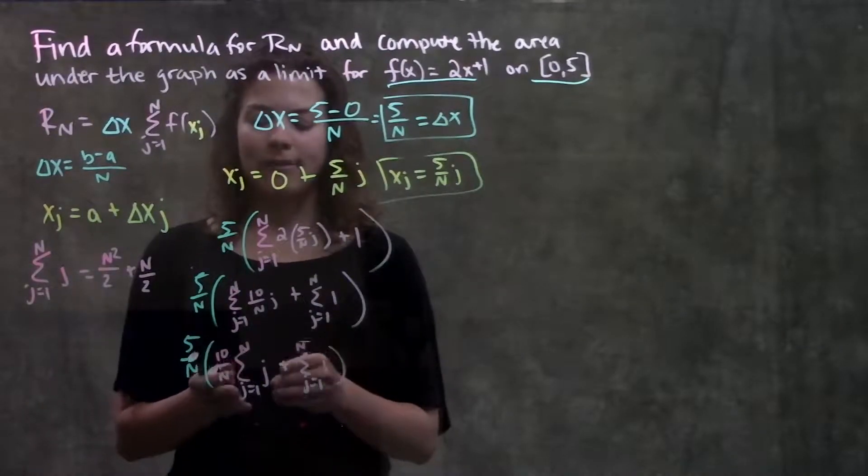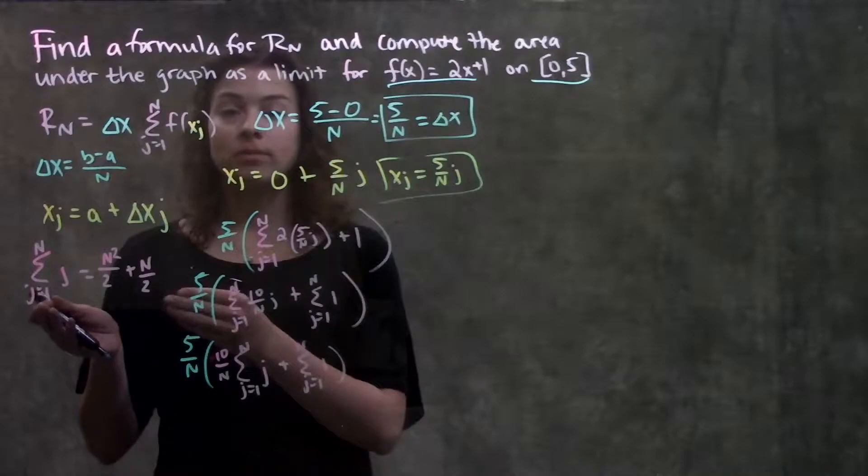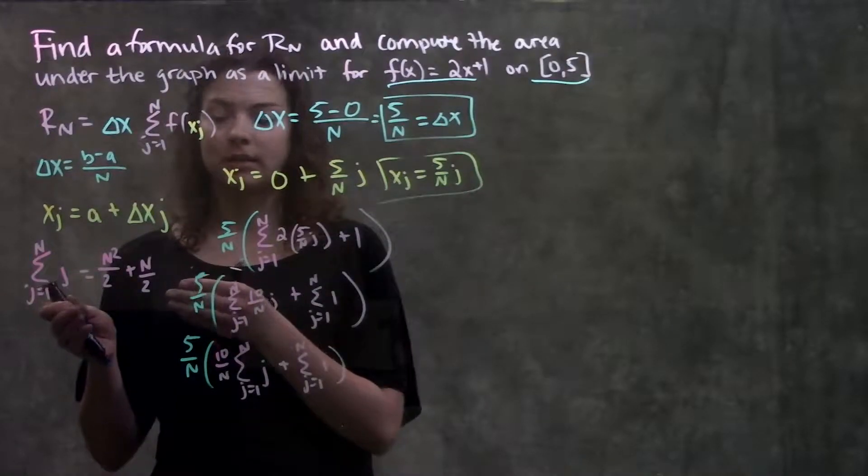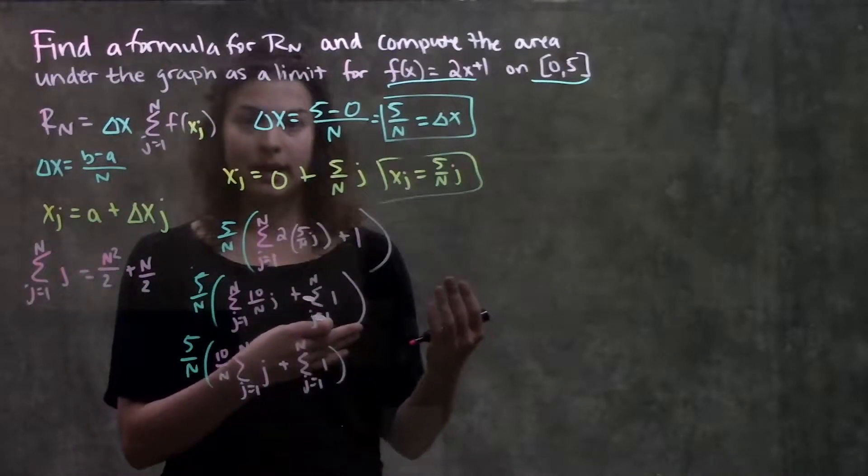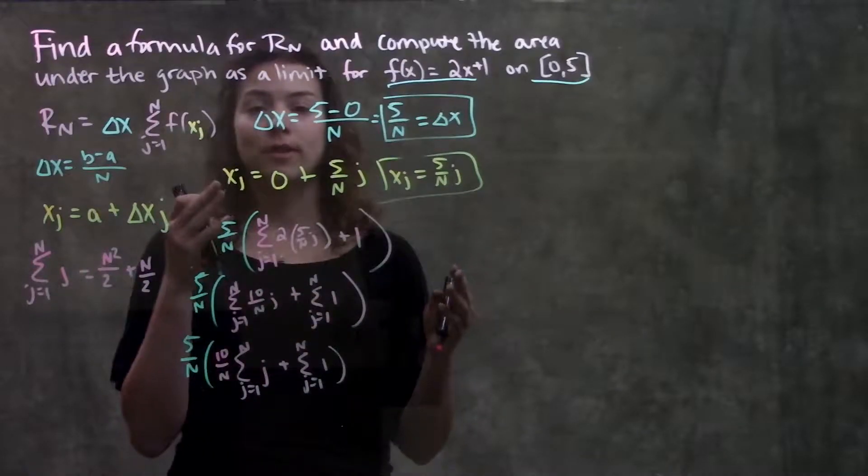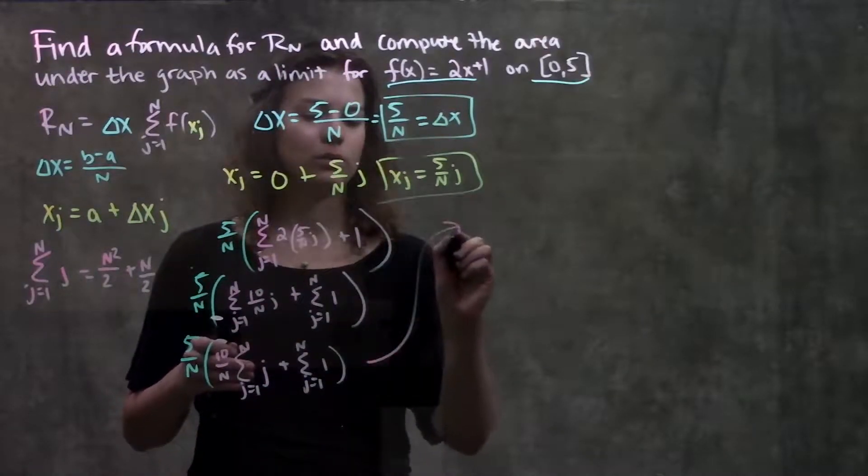Okay. At this point, I have two parts that match the formulas that I was given in this section. So, now I can just plug in my formulas, and see what happens, get a general form for the area underneath this graph.